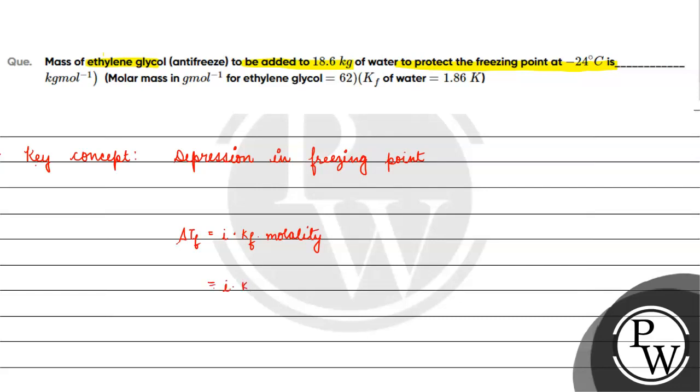Molality is basically equals to number of moles by mass of solvent. Number of moles equals mass of solute divided by molar mass of solute.